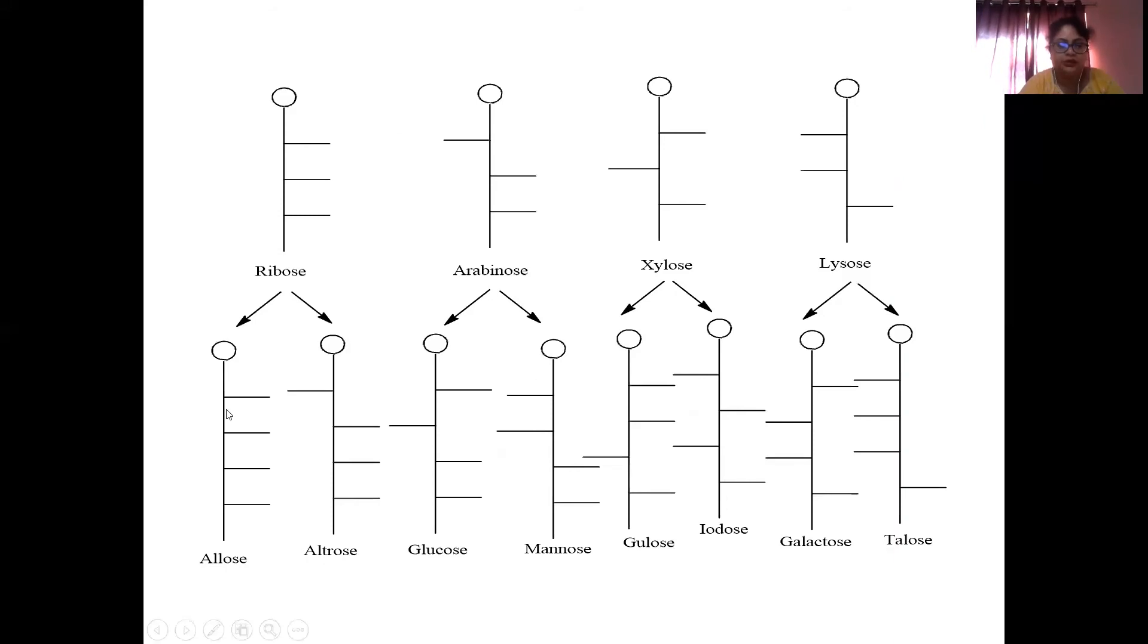Then again we are adding one more carbon on them. So from ribose we are getting allose and altrose. From arabinose we are getting glucose and mannose. From xylose we are getting gulose and idose.